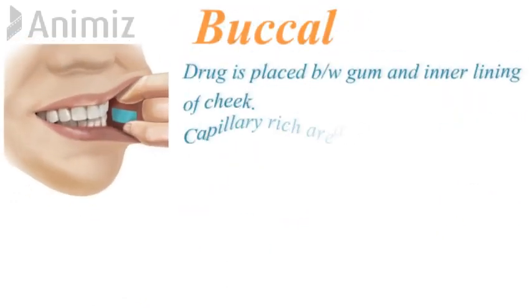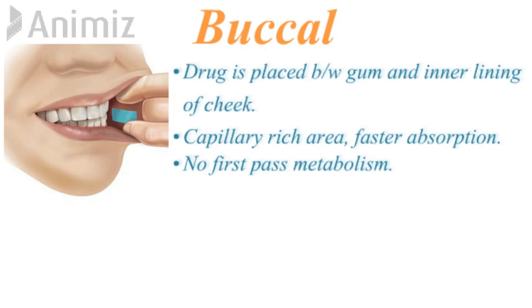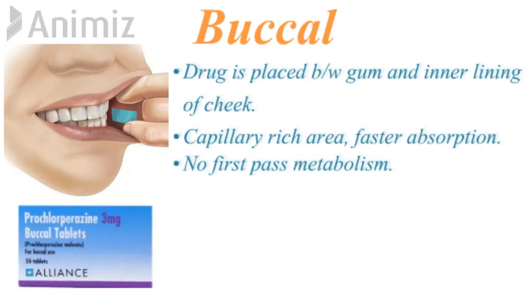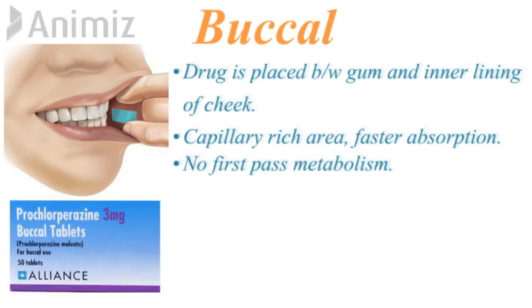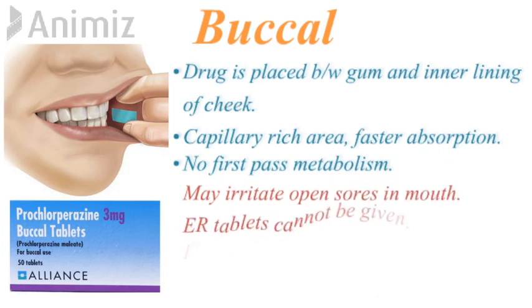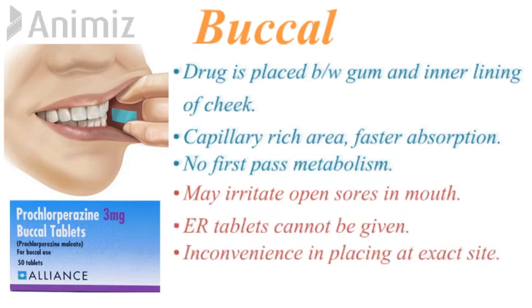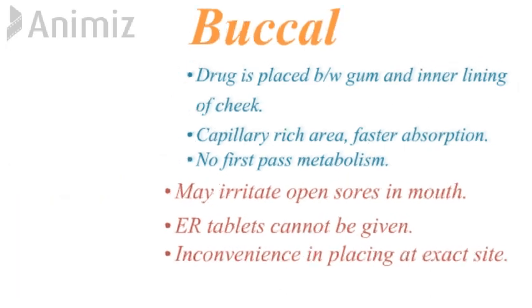Next is buccal route, in which the drug is placed between the gum and the inner lining of the cheek. This area is also richly supplied with blood vessels, hence faster absorption occurs and there is no first-pass metabolism. But it may irritate open sores in the mouth, extended release tablets cannot be given by this route, and it is inconvenient for the patient to keep the drug at the same site.